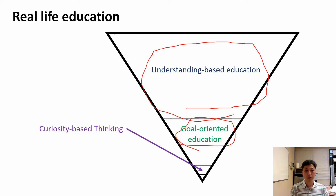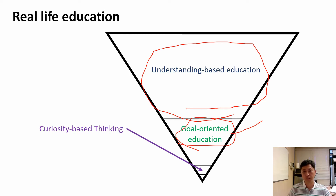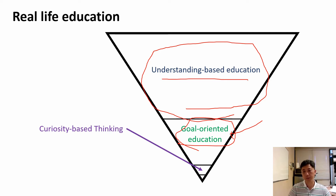So goal-oriented education I put at about 30% — but from my viewpoint it's almost close to zero. Understanding-based is the majority. From my perspective, this education system suppresses the student's brain from thinking — the student's brain cannot really develop. It goes the other way around.